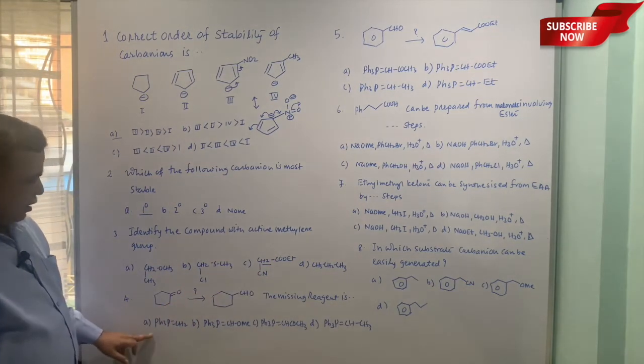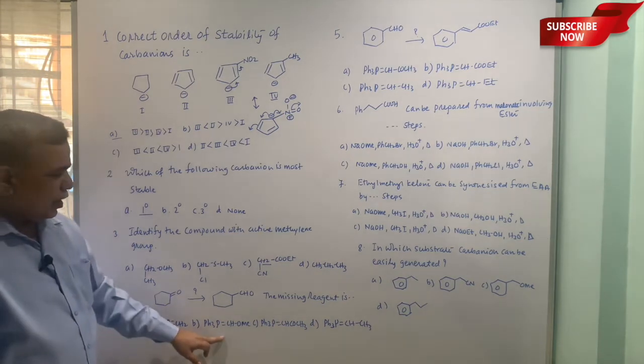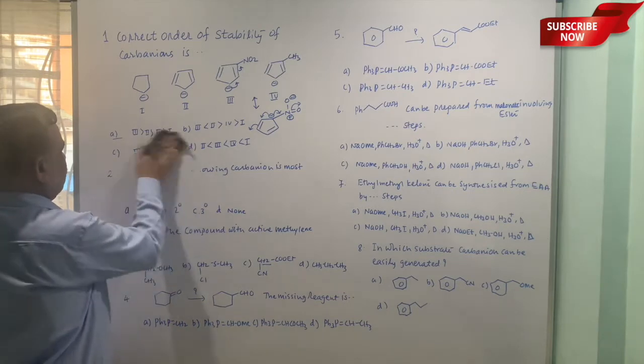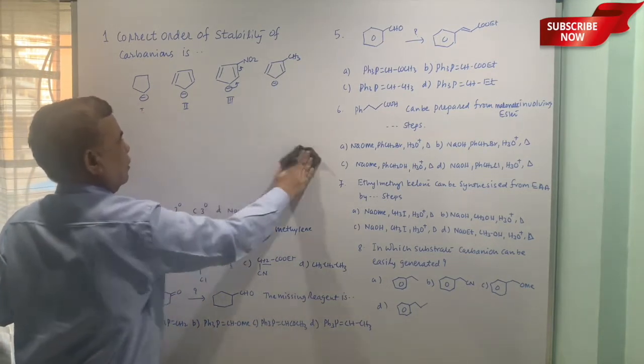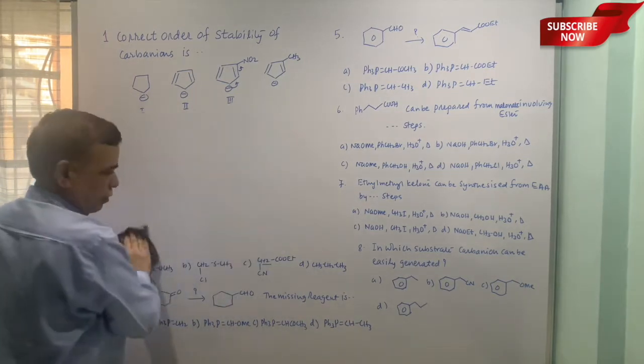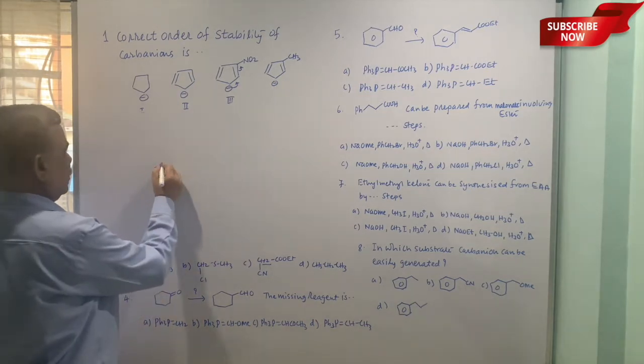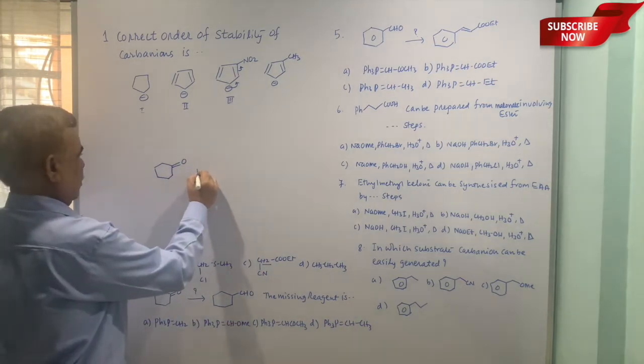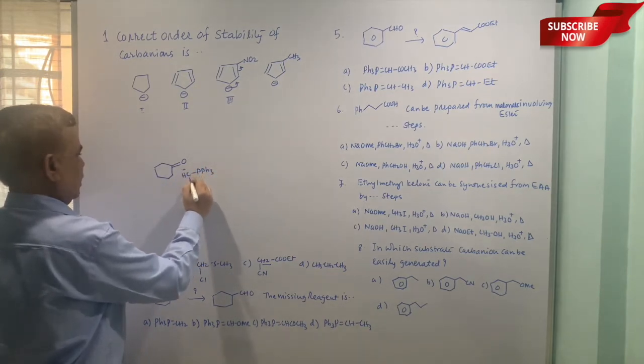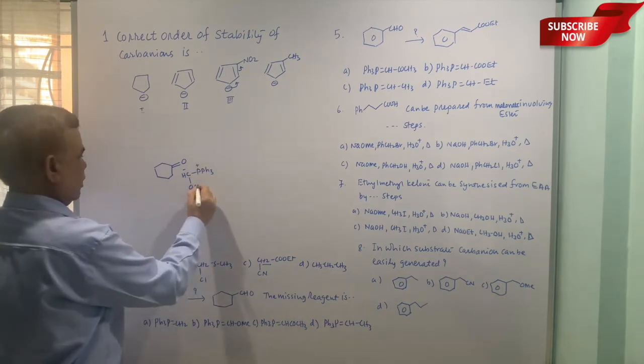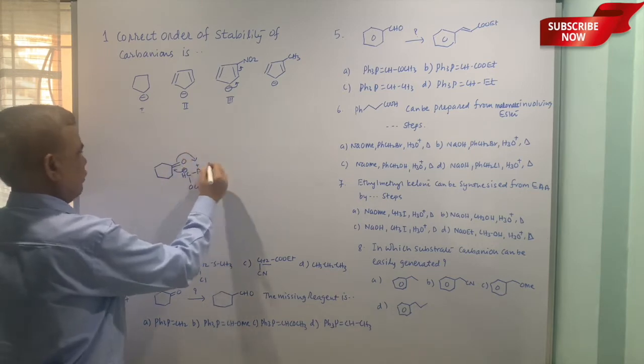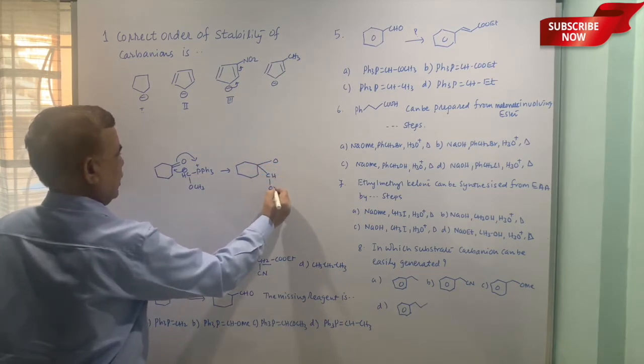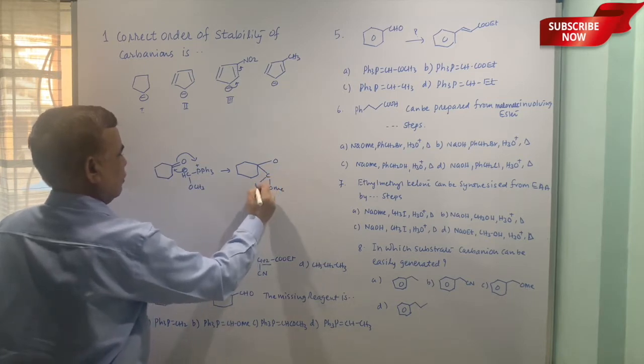Then fourth example, cyclohexanone to this aldehyde. The missing reagent, whether it is this phosphorus ylide, this one, this one, or this one. So I'll just show the simple mechanism to make it understand. This is the carbonyl group and now we have PPh3 CH minus and then OMe is there. This is the phosphorus ylide we are talking about.